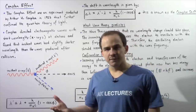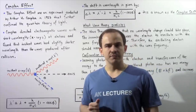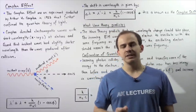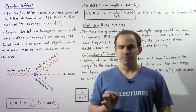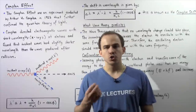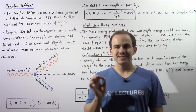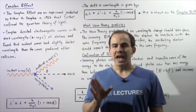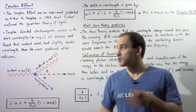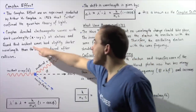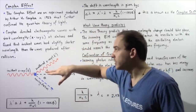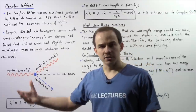Another experiment that confirmed the quantum theory of light was known as the Compton Effect, conducted by Arthur H. Compton in 1923. Compton directed electromagnetic waves with short wavelengths, known as X-rays, at stationary electrons, and examined the collisions between those waves and the electrons. He found that the incident electromagnetic waves had a slightly shorter wavelength than the waves produced after the collision.